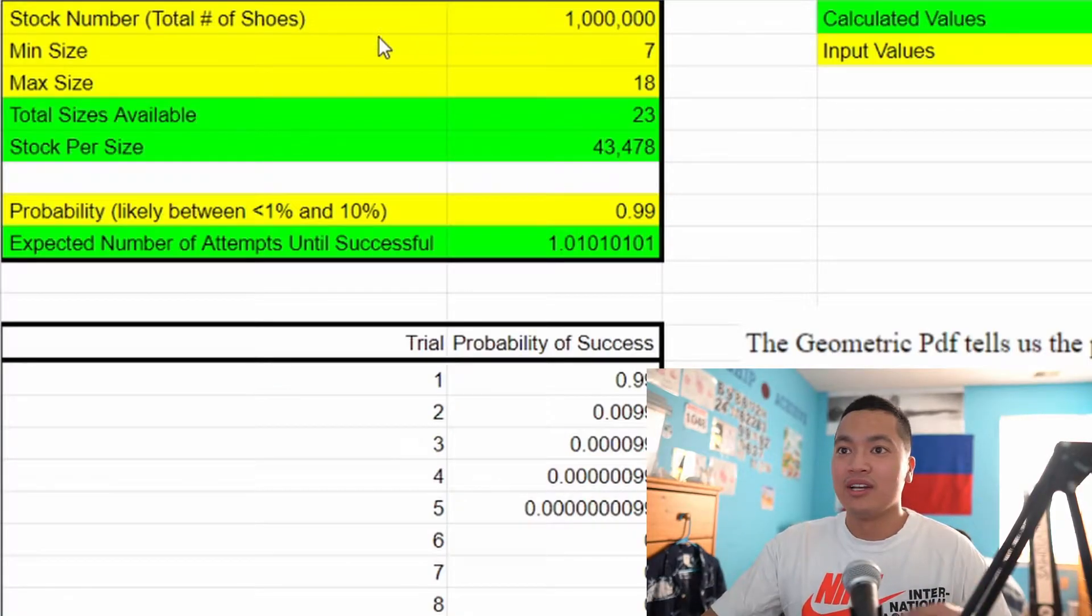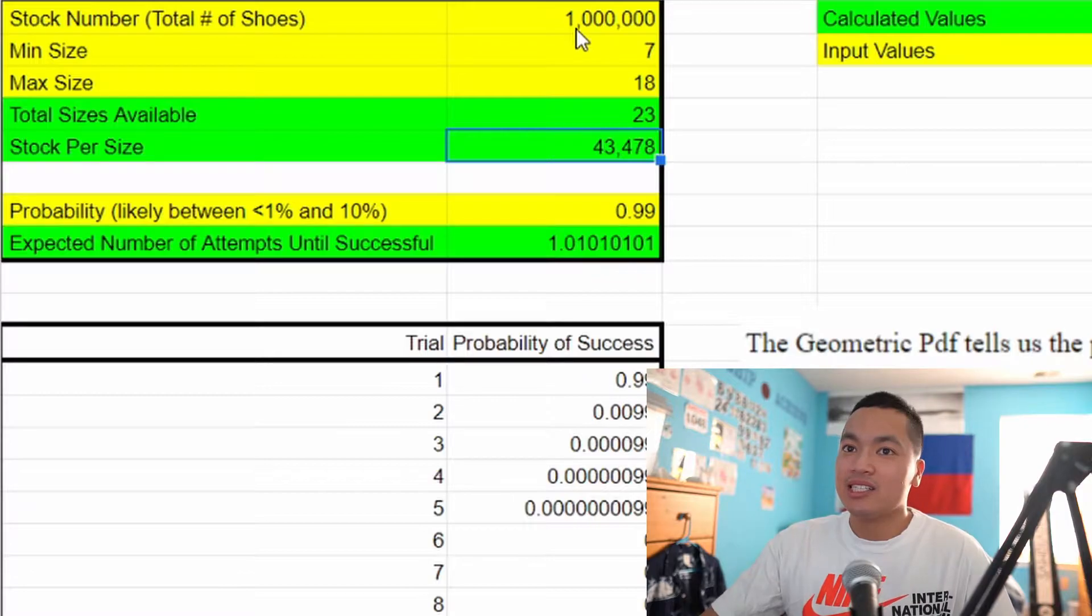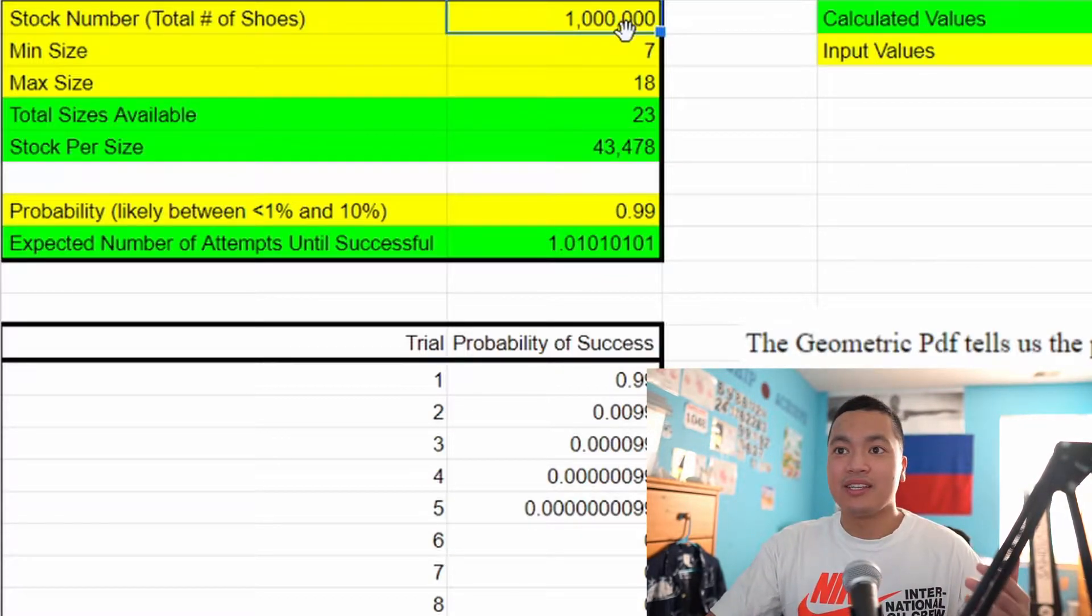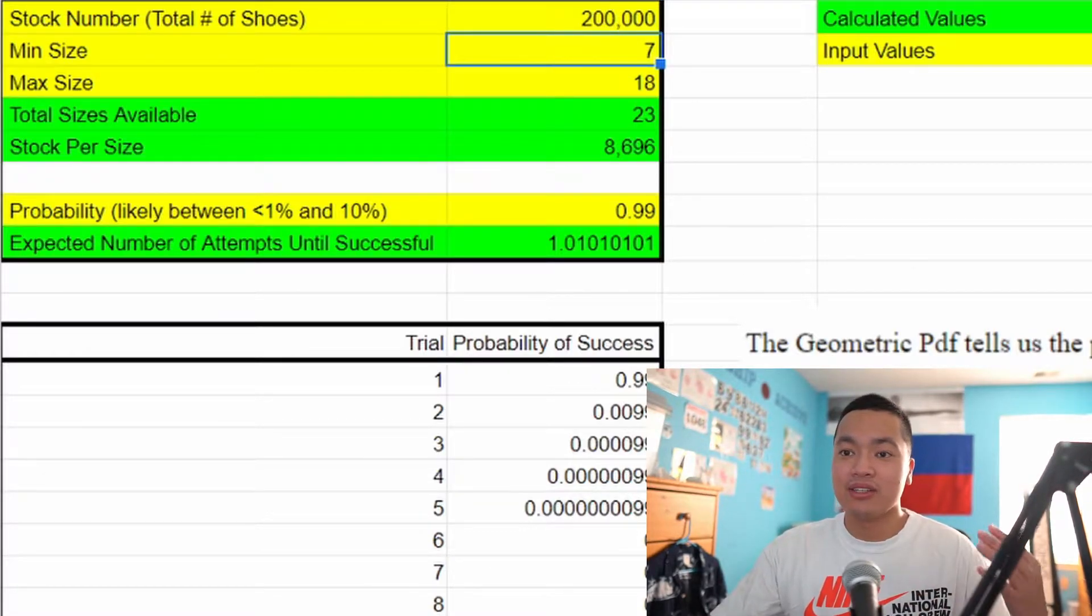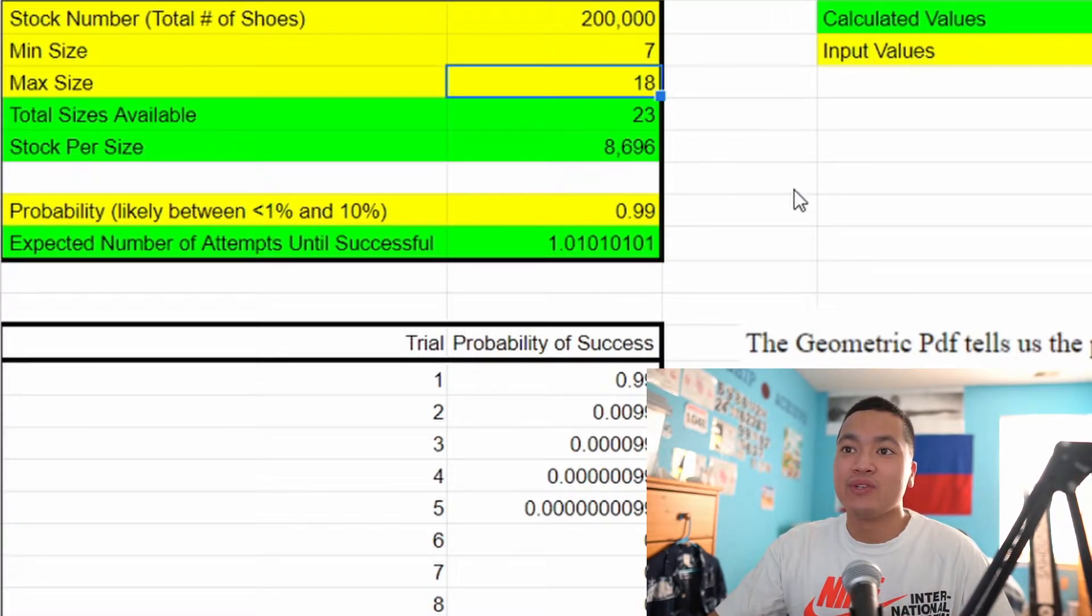So first off let's just look at the raw stock numbers that you can expect on a release and how that affects the number of pairs per size. In this upper left hand corner, let's just look at stock numbers. Given a general release, usually the Sneakers app has around 200,000 to 300,000 pairs. Now I would take that number with a grain of salt. I think that that number is actually lower because when we usually get these stock numbers they're accounting for all different platforms and not just the Sneakers app. So for this example let's take 200,000 pairs. We're going to do a size run of 7 to 18 and so total that is 23 pairs if you include all the half sizes and that pretty much equates to 8,600 pairs per size. Now again that's a rough estimate because some sizes may be more limited than others and more people might be going for the more limited sizes which can also affect probability but this is just to give you a general idea.